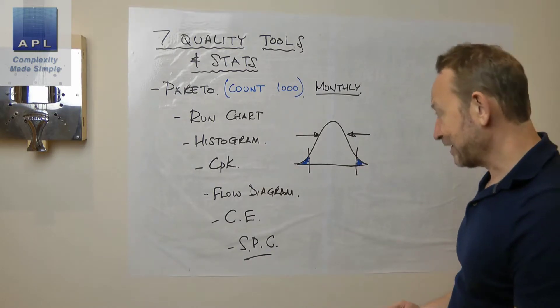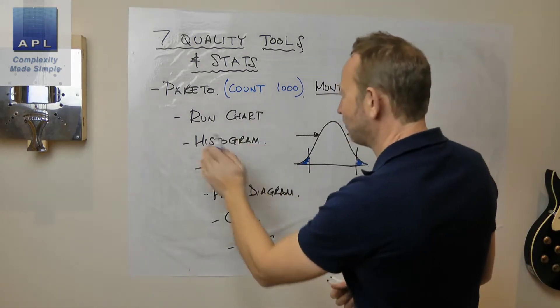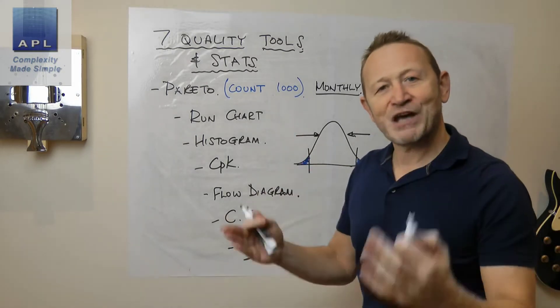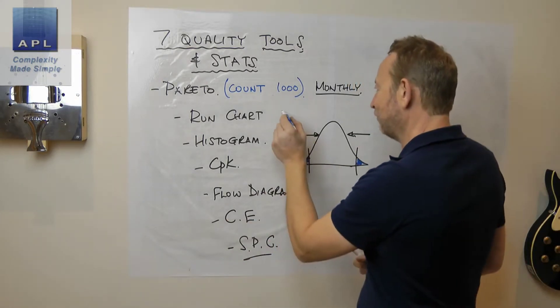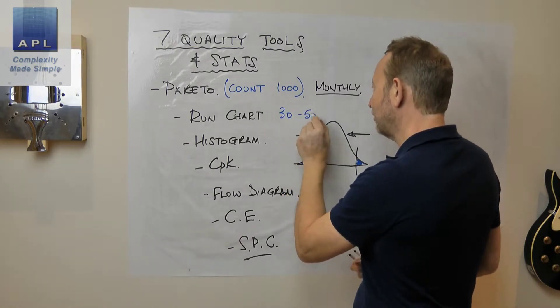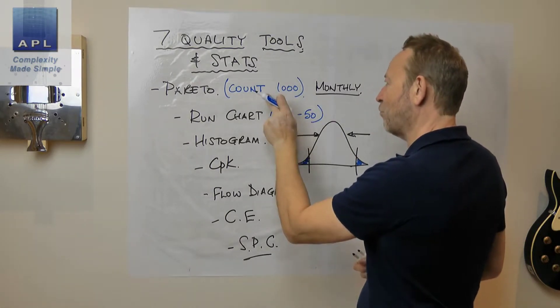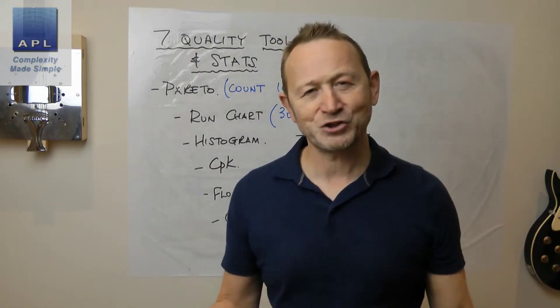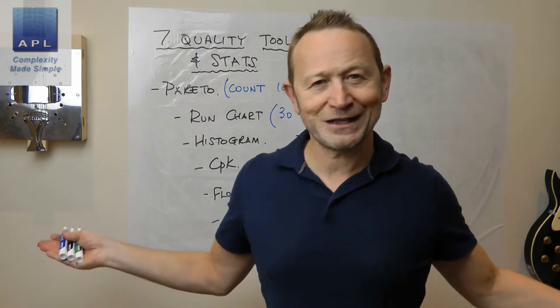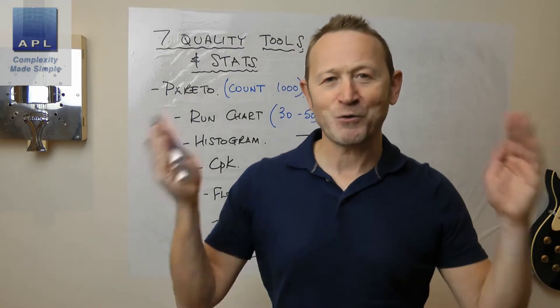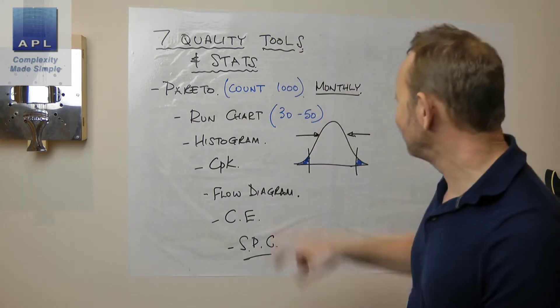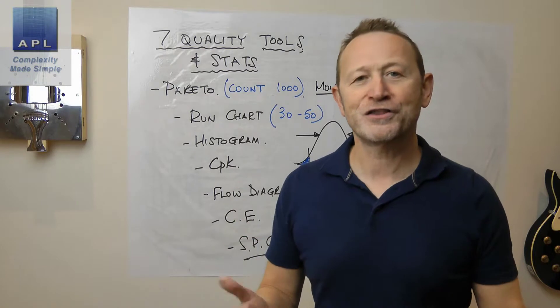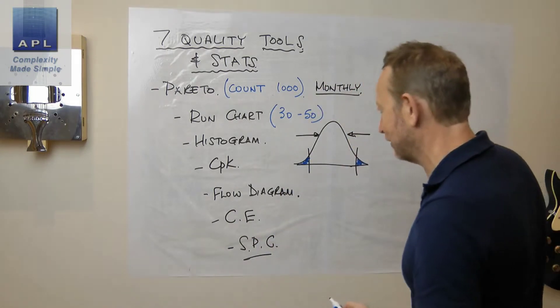Now run chart, now specifically if I'm going to do a run chart, histogram, CPK variable data, again there's a sample size needed here. And if it's variable data, the rule is 30 to 50. 1000 to 3000 if you're counting something, 30 to 50 if you're measuring something. Am I doing a calculation? No, I don't do sample size calculations, I use a simple rule of thumb.